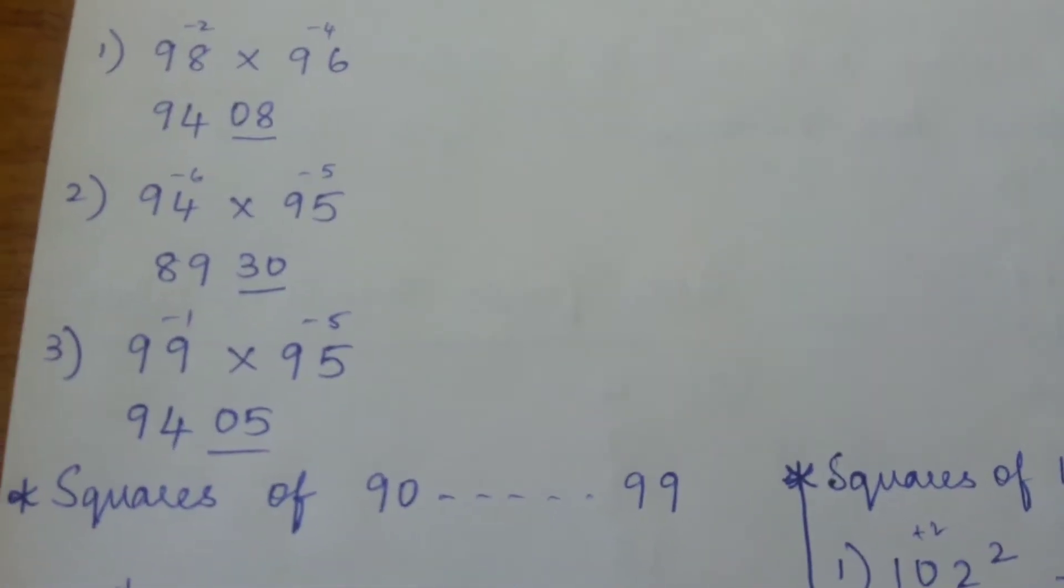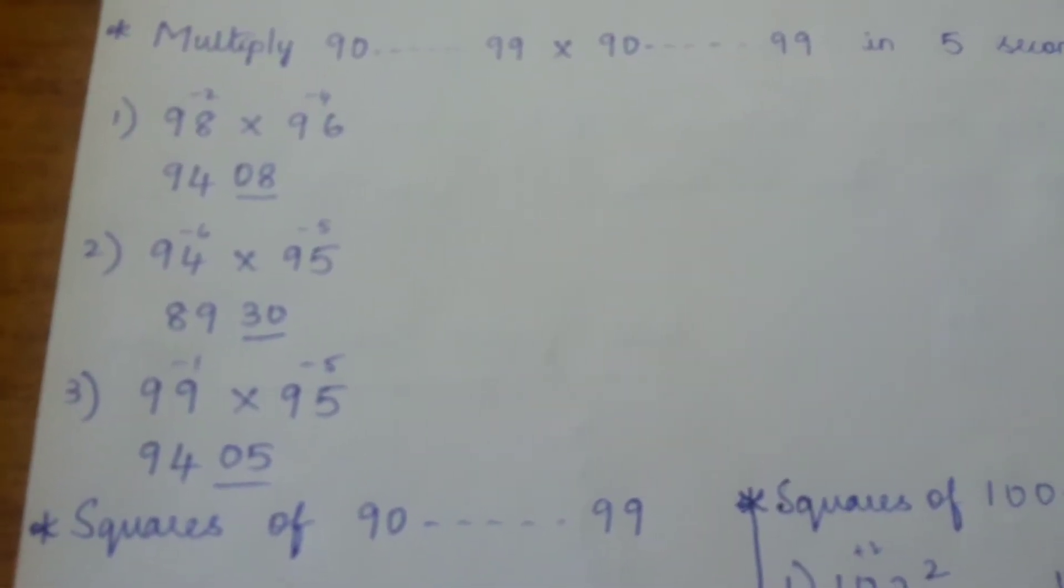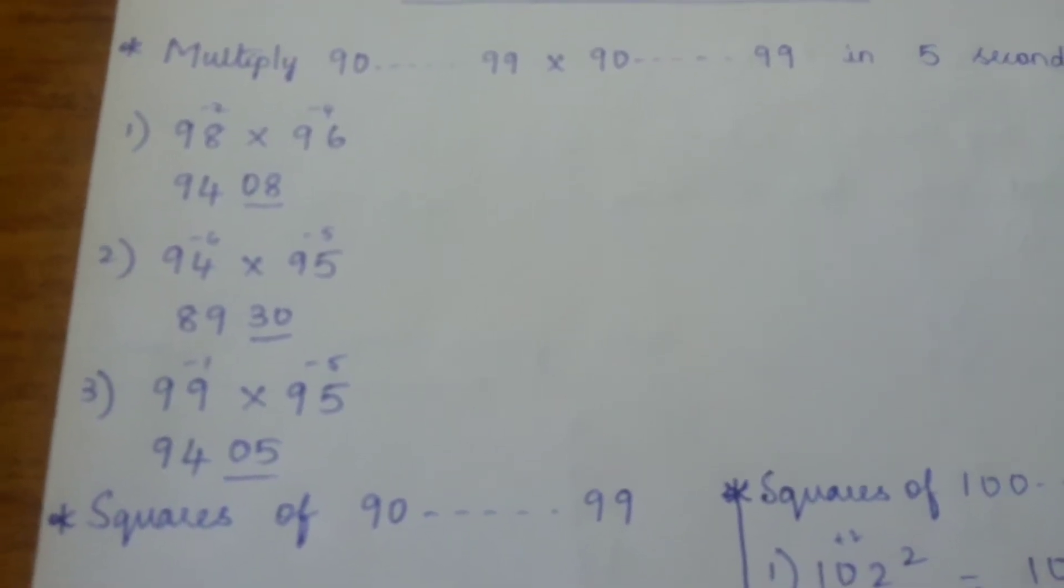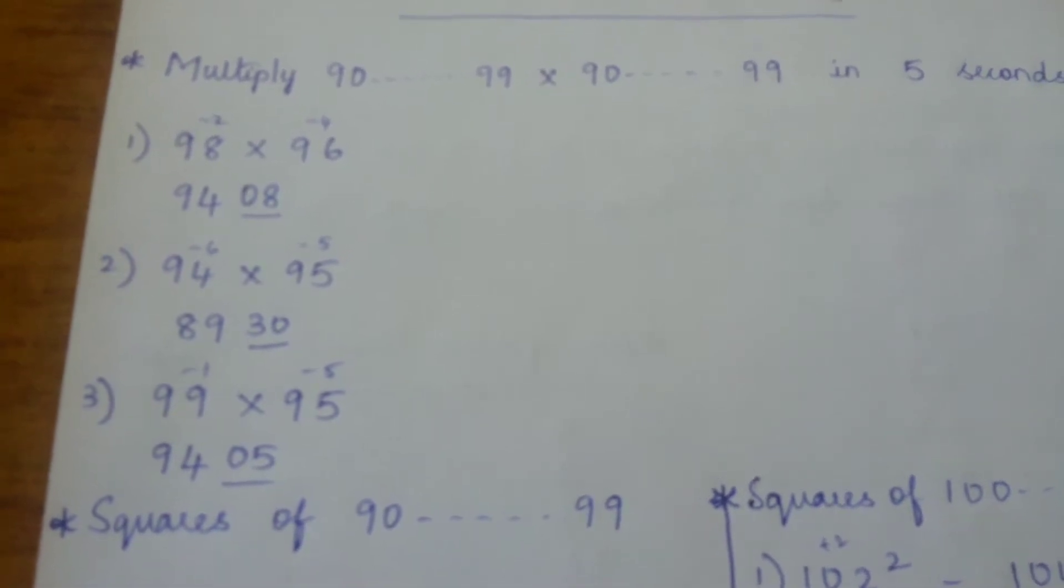Next problem: 94 into 95. 94 is 6 less than 100, 95 is 5 less than 100. So 6 times 5 is 30, the last two digits will be 30. Now subtract: 94 minus 5 or 95 minus 6 gives you 89.